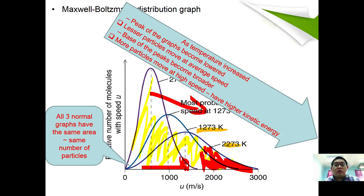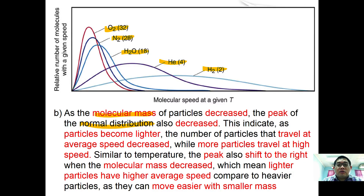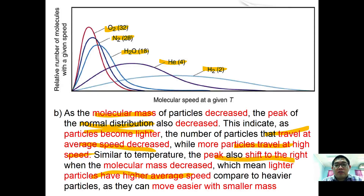The distribution graph can also be explained in terms of molecular mass. The Maxwell-Boltzmann distributions for oxygen, nitrogen, water, helium, and neon show that as molecular mass decreases, the peak of the distribution also decreases. This indicates that lighter particles have fewer molecules traveling at average speeds while more travel at high speeds. The peak also shifts to the right, indicating lighter molecules have higher average speeds because they can move more easily with smaller mass.